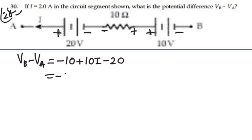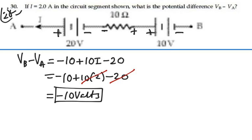This would be negative 10 plus 10 times 2 amps minus 20. So we have negative 10 plus 20 minus 20. So this is going to be equal to negative 10 volts. So the voltage VB minus VA is negative 10 volts.